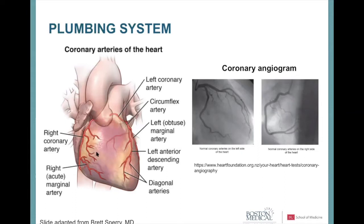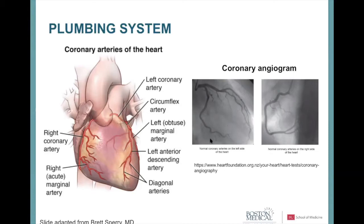The coronary arteries lead from the aorta and provide nourishing blood to the heart muscle. The right coronary artery supplies the right ventricle and usually the bottom of the heart. The left coronary artery is subdivided into the left main, circumflex, and left anterior descending coronary arteries. We look at their patency using an invasive coronary angiogram — a tube placed into the leg or wrist artery, with contrast injected to reveal blockages by X-ray.